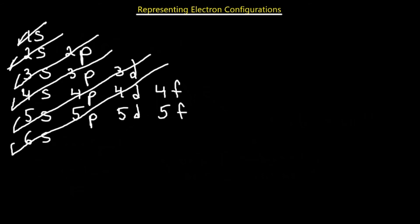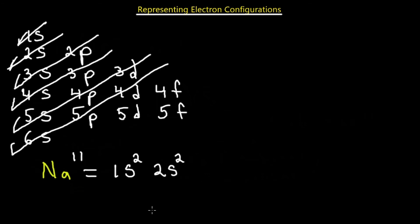Let's do an example with sodium. Sodium is the 11th element, so it has 11 electrons. The configuration starts with 1s², filling the first shell completely. Then 2s² — that's four electrons so far. Next is 2p⁶, bringing us to 10 electrons. Finally, 3s¹ — because we only need 11 electrons total. So the full electron configuration of sodium is 1s² 2s² 2p⁶ 3s¹.